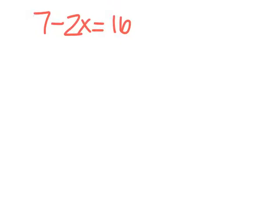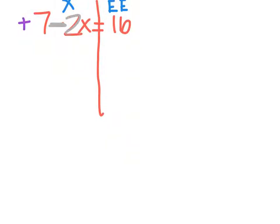Alright, we have one last problem. First thing we're going to do is draw our line down the middle. Then we label our sides — x's on one side because that's what I'm solving for, and EE, which stands for everything else, on the other. To get x alone, on the left side of this line, the part that doesn't have x is this 7. It is very important to note that this 7 is a positive 7 — this minus sign goes with that 2.